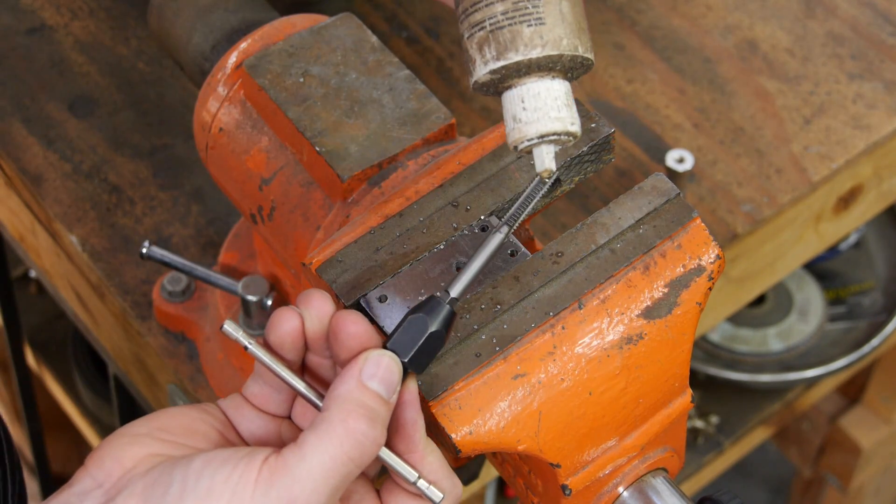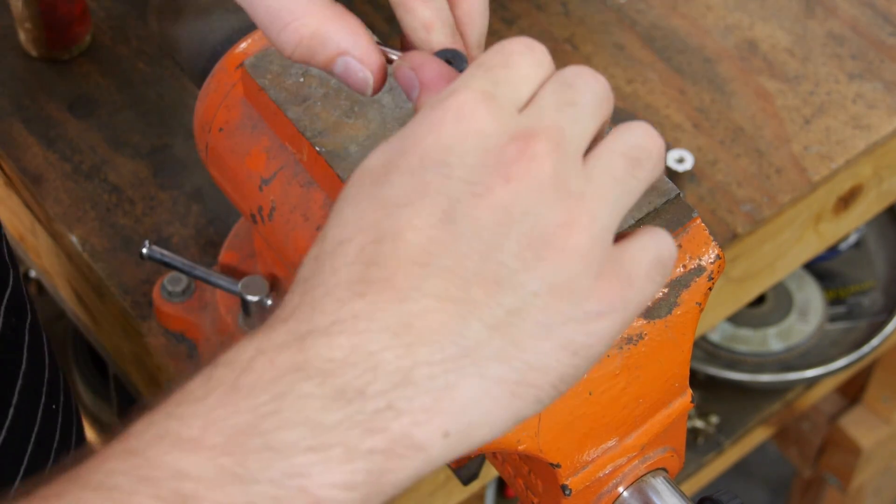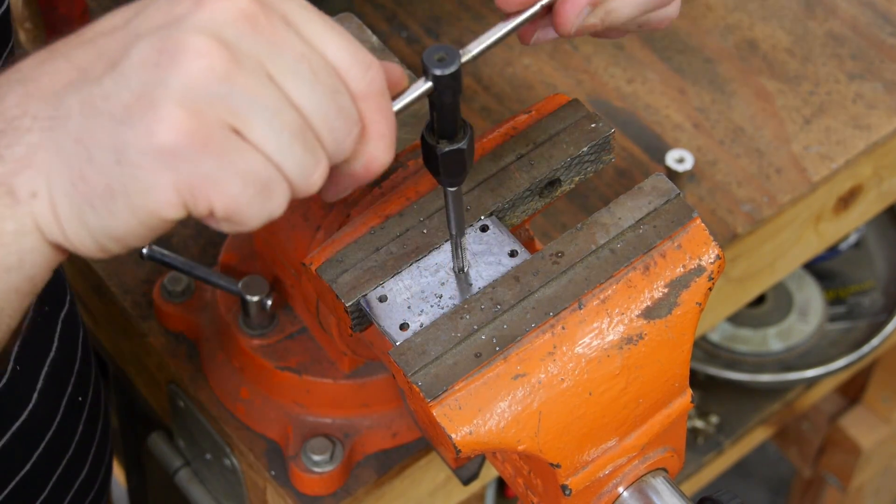Be sure to use tapping or cutting oil, and once you get a bite, spin the tap backwards slightly with every clockwise turn to dislodge the shavings and prevent your tap from breaking.